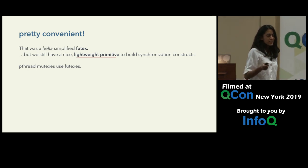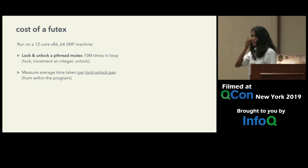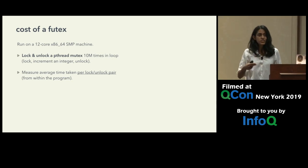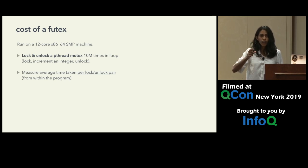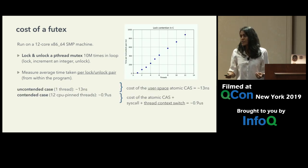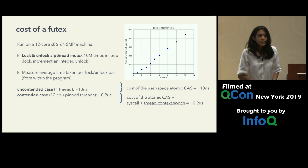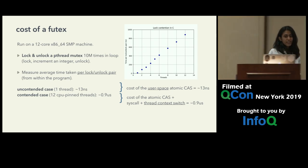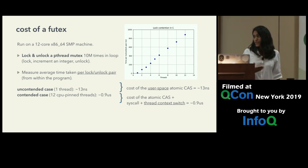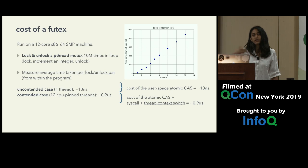What does this upgrade cost us? In the microbenchmark measuring lock-unlock pairs for a pthread mutex: in the uncontended case with one thread, it's about 10 nanoseconds — the cost of an atomic compare-and-swap, which is what we'd expect. In the contended case with 12 threads, the cost goes up to one microsecond. This comes from the context-switching cost: switching into the syscall, switching into the kernel, and the waiting.